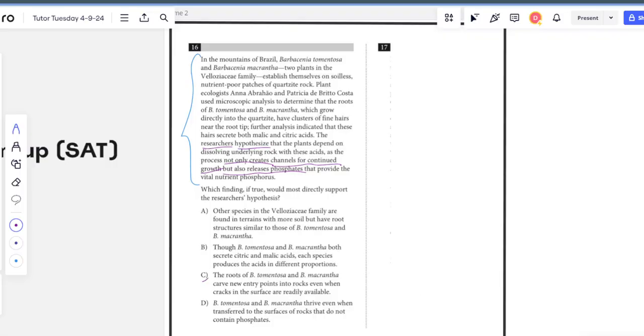The researchers hypothesize that plants depend on dissolving underlying rock with these acids, as the process not only creates channels for continued growth, but releases phosphates that provide the vital nutrient phosphorous. The hypothesis is that the plants depend on dissolving underlying rock. It creates not only channels for continued growth, but also releases phosphates. I see an answer choice that stands out here. It is going to be C. If roots of these plants are carving new entry points into the rocks, even when cracks are already readily available, then that would show these plants are continuing to dissolve rock because the process of dissolving is creating benefits for them.